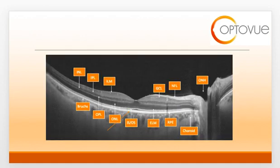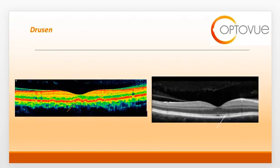You may recall this slide from previous webinars. On this slide, I have delineated the various layers of the retina and choroid. The orange arrow is pointing to the area on the OCT that we will be emphasizing in this video.